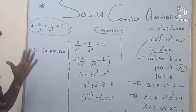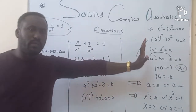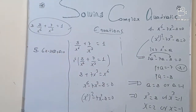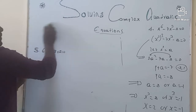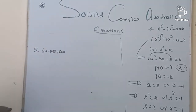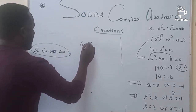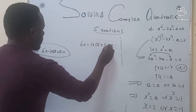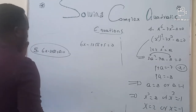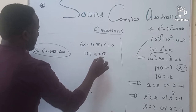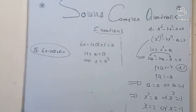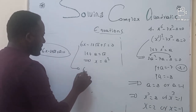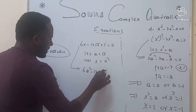If you have any question about this lesson, you are welcome to write it in the comments and we will solve the problem you have. For the final question: this is 6x minus 17 times the square root of x plus 5 equals 0. Let A equal the square root of x, so x equals A squared. Substituting, the equation becomes 6A squared minus 17A plus 5 equals 0.